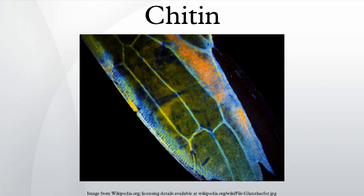Etymology: the English word chitin comes from the French word chitin, which first appeared in 1821 and derived from the Greek word meaning covering. A similar word, chiton, refers to a marine animal with a protective shell.